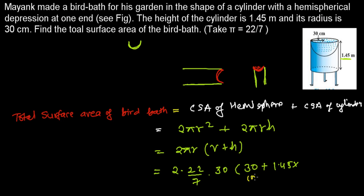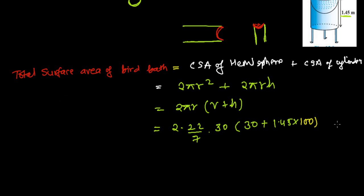We're taking this in centimeter, so this thing should also be in centimeter. 1.45 is meters so I have to multiply by 100 so that it will go to centimeter. Since it's a surface area, the unit will be centimeter square.